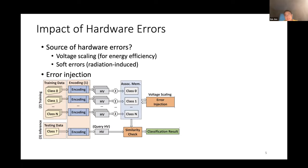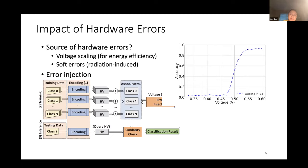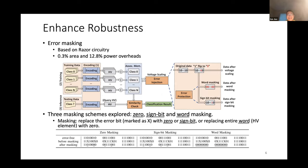To enhance the robustness of HDC against hardware errors, techniques from the circuit and design automation community are borrowed. One specific technique is Razor circuitry for error detection, combined with simple error masking techniques: zero masking, sign-bit masking, and word masking, operating at different granularities — bit level or word level. Using these, the robustness of HDC can be significantly improved.